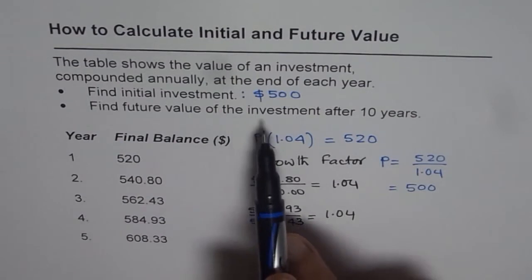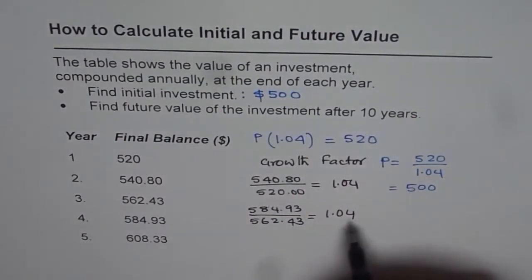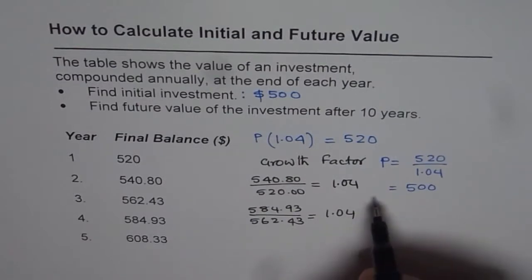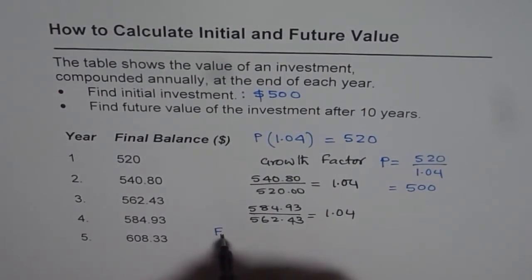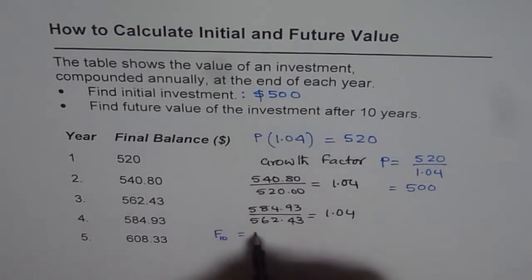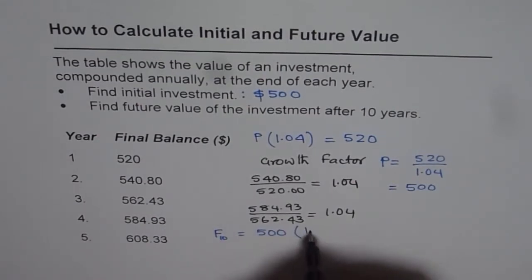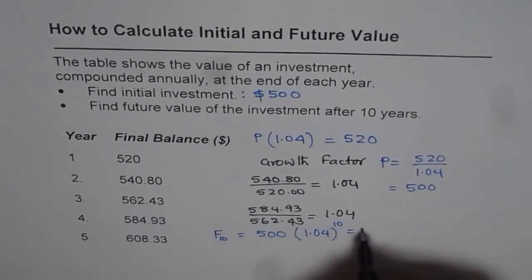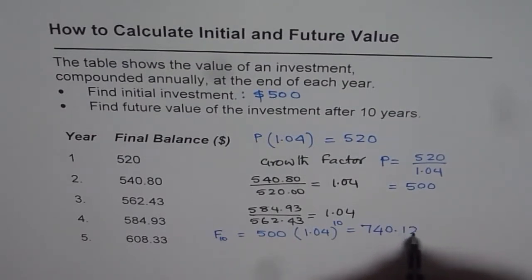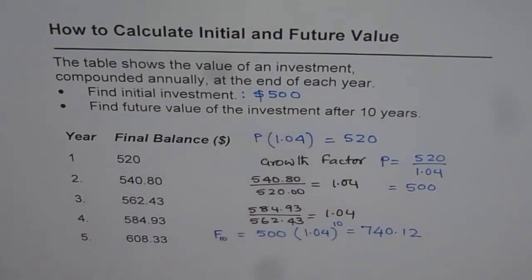Now if it is the future value of the investment after 10 years we have to multiply it 1.04 to the power of 10. So we can say the future value which is F for us after 10 years will be equal to initial amount of 500 times 1.04 to the power of 10. So let's calculate how much do we get. So we have 500 times 1.04 to the power of 10. It is equal to 740.12. So that is our answer as a future value after 10 years.